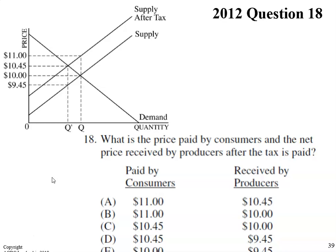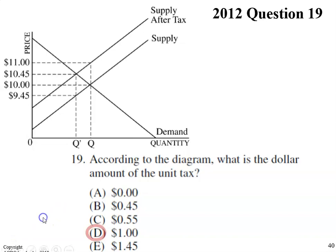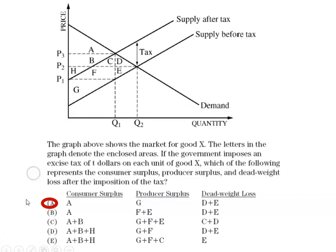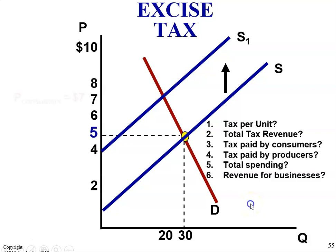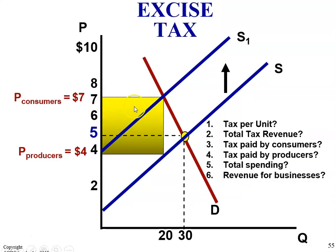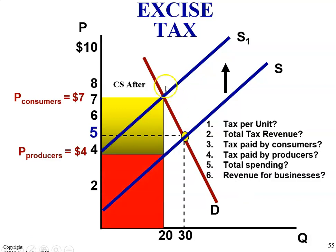If you can answer this question, the answer should be D. In another practice question, the answer should be D, and the answer should be A to the next question. Considering this excise tax graph: consumers would end up paying $7, producers would end up receiving $4, and this area represents the total tax revenue. This region represents consumer surplus after the tax, and this represents producer surplus after the tax.